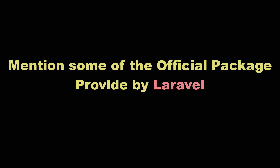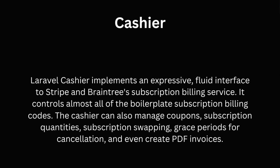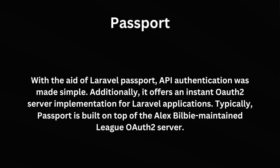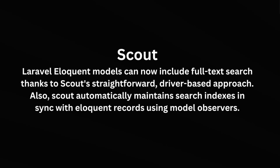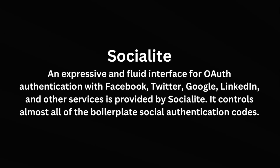Mention some of the official packages provided by Laravel. Some packages are Cashier, Passport, Scout, and Socialite. Laravel Cashier is used for subscription-based billing. Passport is used for API authentication — using Passport we can do API authentication really easily. Scout helps us perform full-text search in Laravel. Using Socialite, we can log in using Facebook, Twitter, or a Google account.